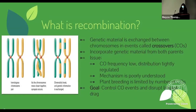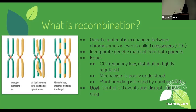I want to answer a few questions before talking about my actual projects. First, what is recombination specifically? Recombination is the process by which genetic material is exchanged between chromosomes in events called crossovers. This process ensures maximum genetic diversity by incorporating genetic material from both parents. As you can see in the diagram, by the end of this process, both chromosomes have material from both of the original starting chromosomes.